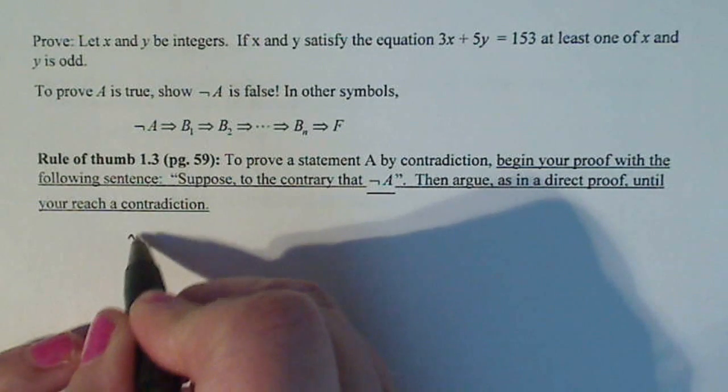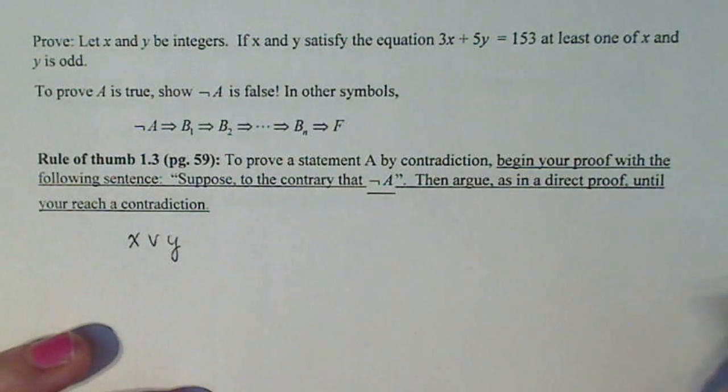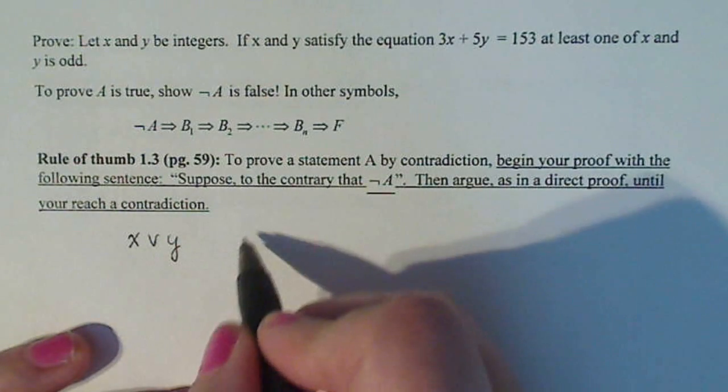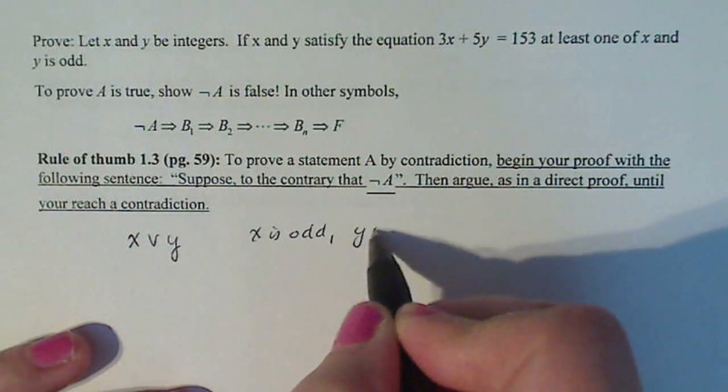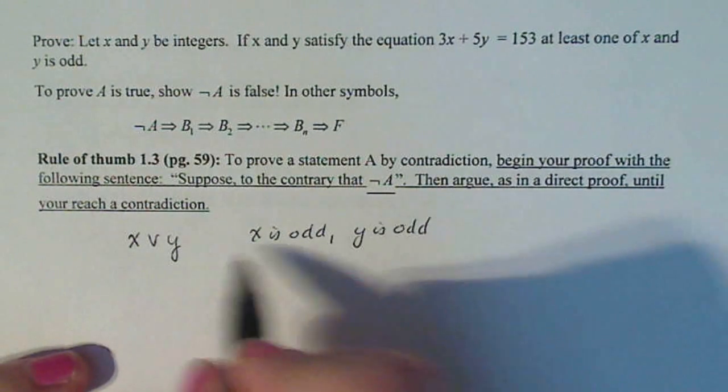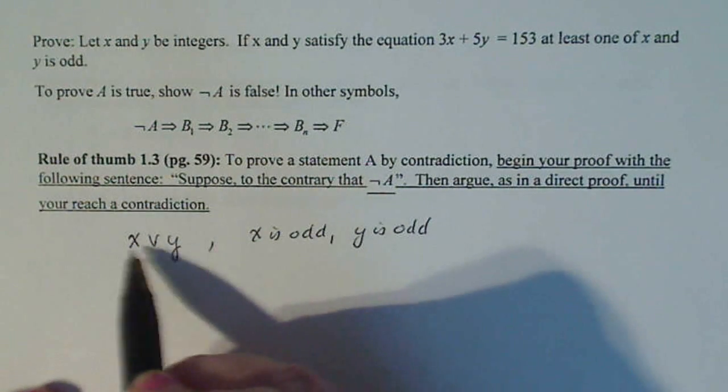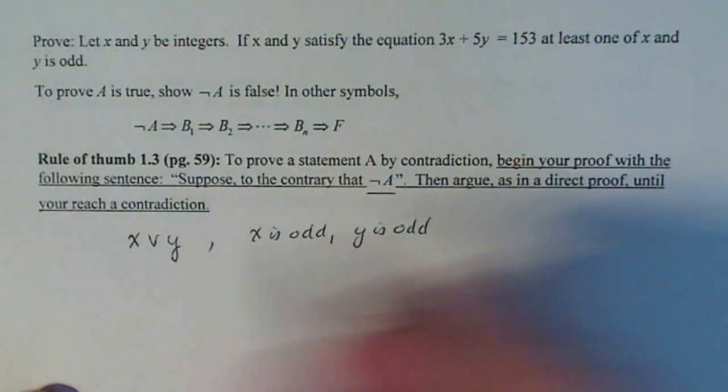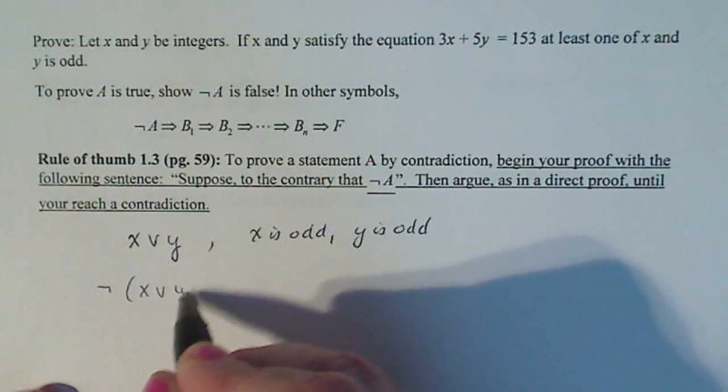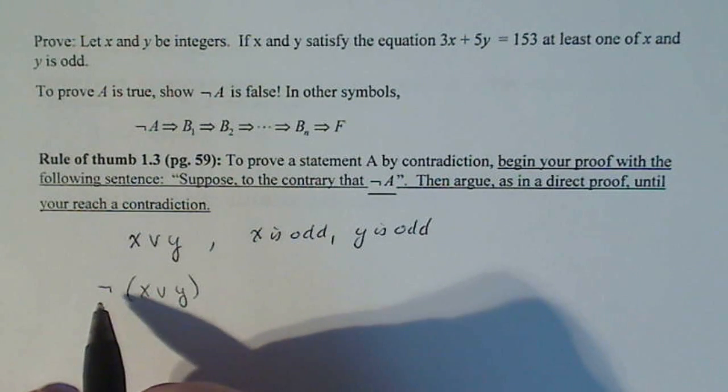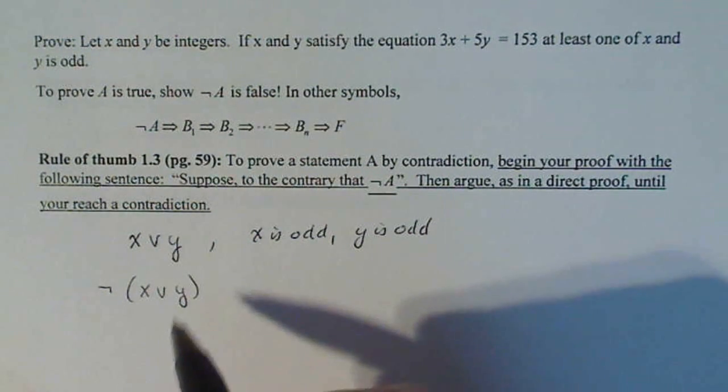that means x or y is true. X or y, or x is odd and y is odd. So this statement here means that one or the other is odd. So what's the negation of that negating x or y? This is how my class's textbook says negative. So your class may be different. So don't panic.